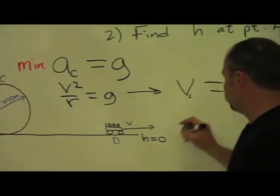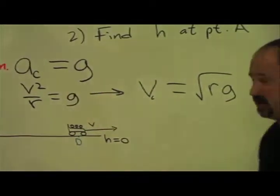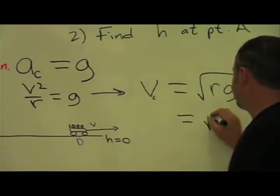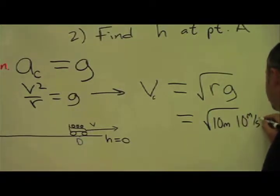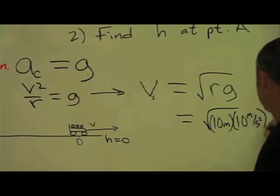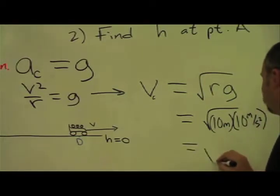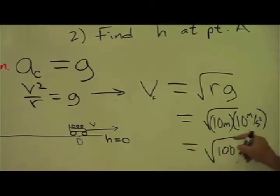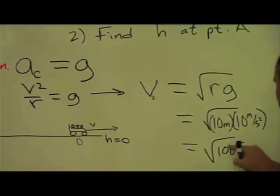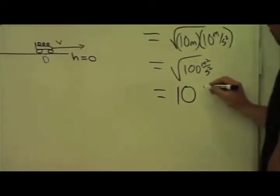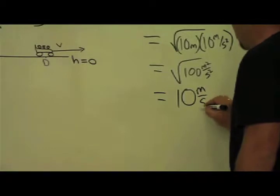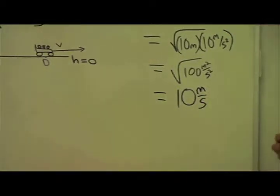We know by definition, centripetal acceleration is v squared over r. Therefore, we know that the minimum speed has to be the square root of r times g — the minimum speed at point C. The radius of the loop is 10 meters, and the acceleration of gravity is 10 meters per second squared. So we get the square root of 100 m²/s², which is 10 meters per second. We now know the minimum speed necessary to make the loop is 10 meters per second.